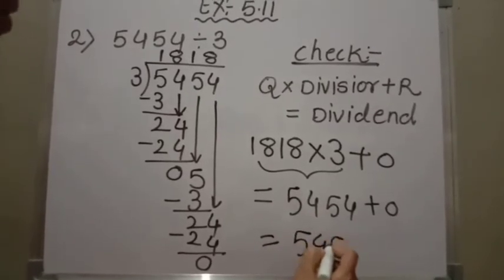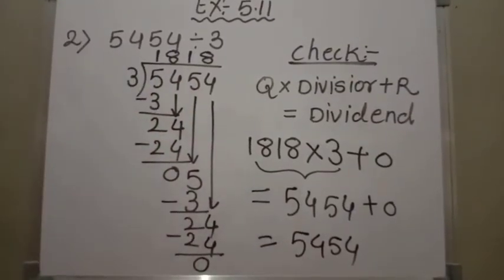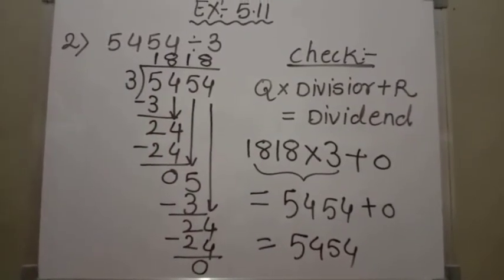So here the answer is 5454, which is the same as the dividend given in the question. It means our problem is correct.